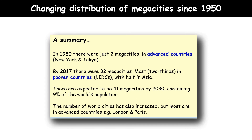By 2030 there are expected to be 41 megacities containing 9% of the world's population. The number of world cities has also increased, but most of these are in more advanced countries of the world, such as London and Paris.